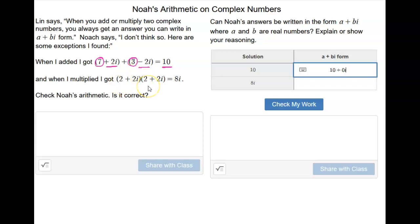When we multiply this one, so let's check his multiplication just to make sure that he's good. 2 times 2 is 4. 2 times 2i is 4i. 2i times 2 is positive 4i. And 2i times 2i is, sorry, 4i squared. Positive 4i squared.